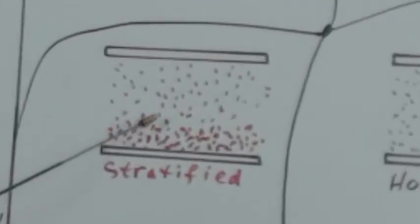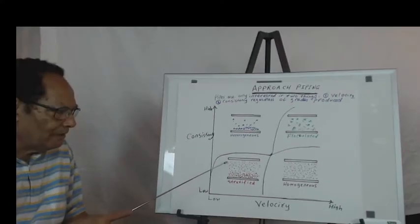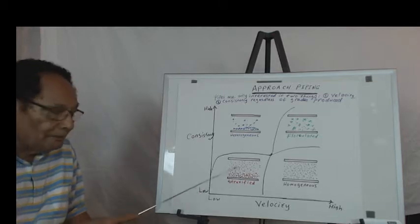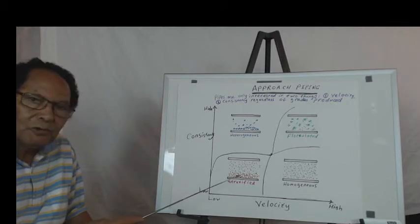Here is another case, which is low velocity, low consistency. Well, I'm measuring a consistency which is low, it's fine. But maybe the designer gives you larger pipes, then you end up with a situation like that. We call it stratified. Eventually, it's going to settle down in the bottom and it's going to flocculate back again.